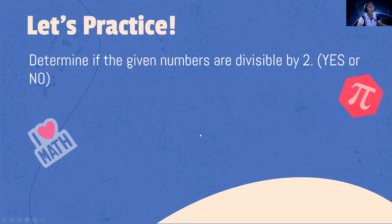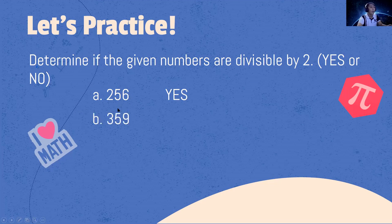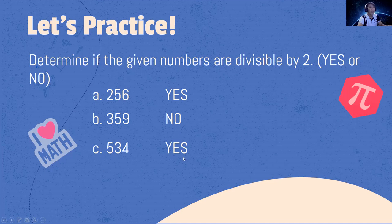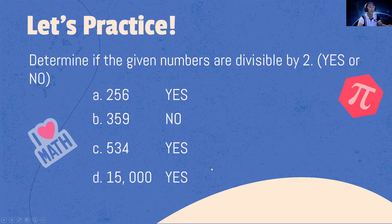Let's practice. Determine if the given numbers are divisible by 2. The first example is divisible by 2 because the number ends with 6, which is even. 359 is not divisible by 2 because it ends with 9, which is an odd number. 534 is divisible by 2 because it ends with 4, an even number. 15,000 is divisible by 2 because it ends with 0, an even number.